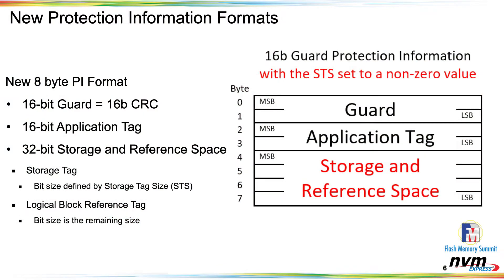Protection information checks the data as it passes from the host to the controller, and then as it goes into the NVM subsystem you can verify the read-out order, and when you transfer from the controller back to the host on a read. With the new protection information, we kept the original eight-byte format, but the items in red are what changed. We've taken the reference tag and split it into two tags. One is now called the storage tag — similar to the application tag — taking some bits from the old reference tag. The controller reports how many bits are allocated to the storage tag and how many to the reference tag, which we call the storage and reference space.